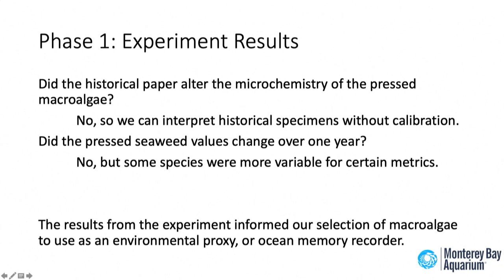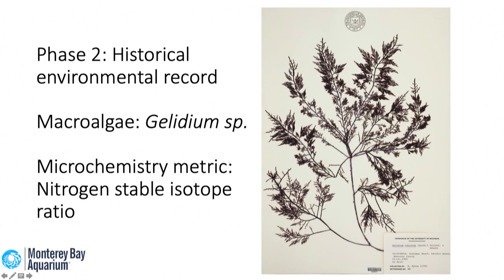To sum up: the historical paper did not alter the microchemistry of the pressed macroalgae, so we can interpret historical specimens without calibration. And the pressing and drying process did not significantly alter microchemistry, though some species were more variable for certain heavy metal metrics. We then used these results to pick one seaweed species as our environmental proxy — our ocean memory recorder. We chose Gelidium, the branching red species, because it performed consistently well and, being branching, we could remove small portions without affecting the overall appearance of the pressing.